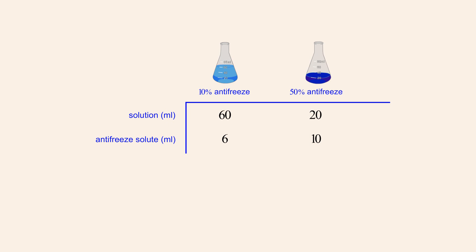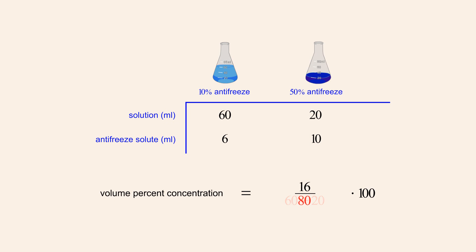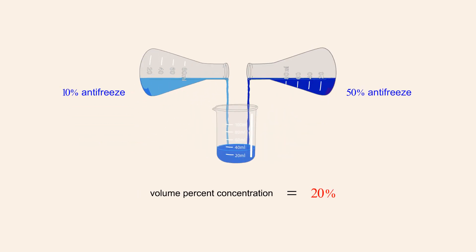Now we can calculate the volume percent of antifreeze in the mixture of the two solutions by using our formula. The volume of pure antifreeze solute in the mixture is six milliliters plus ten milliliters, or sixteen milliliters, and the volume of the mixture of the two solutions is sixty milliliters plus twenty milliliters, or eighty milliliters. So the fraction of solution which is antifreeze is sixteen divided by eighty, or zero point two. Multiplying this fraction by one hundred, we get a volume percent concentration of twenty percent. So the percentage of antifreeze in the mixture is twenty percent.